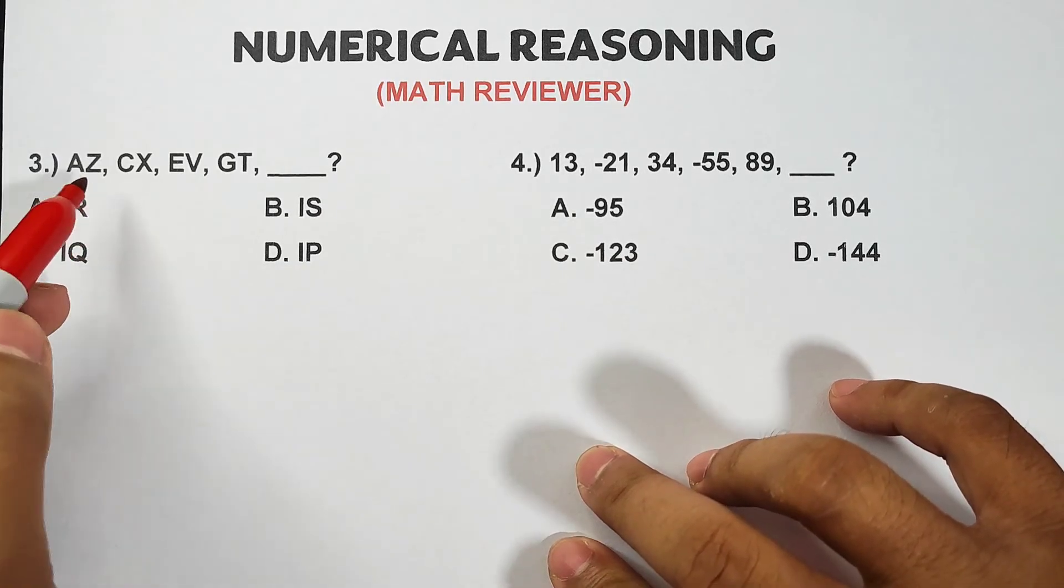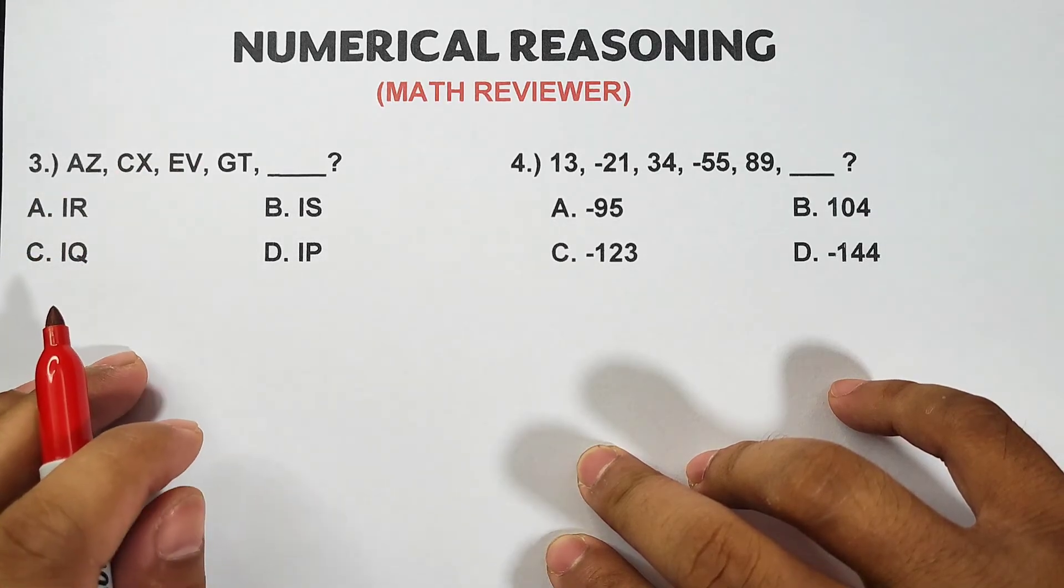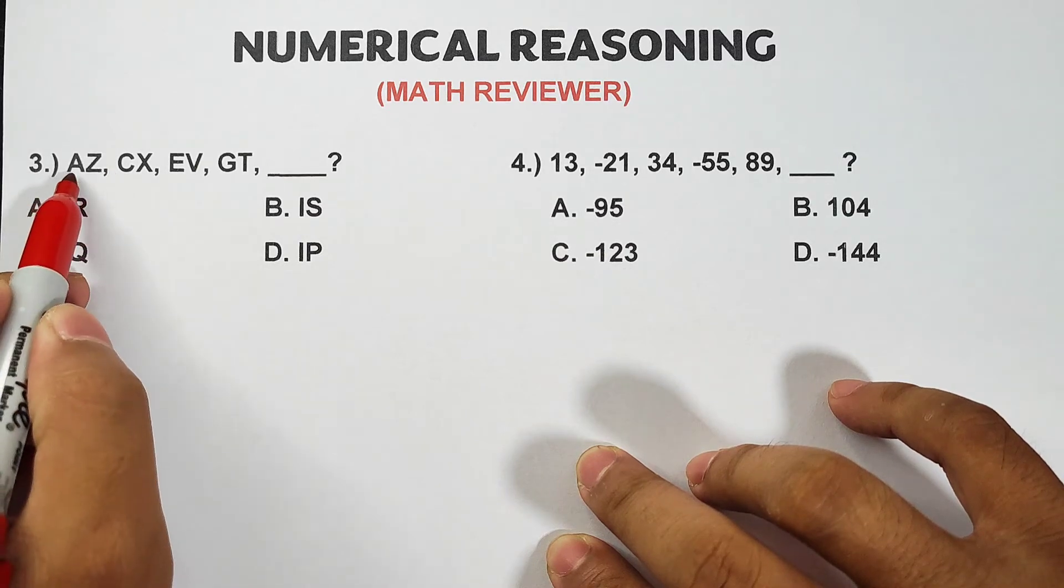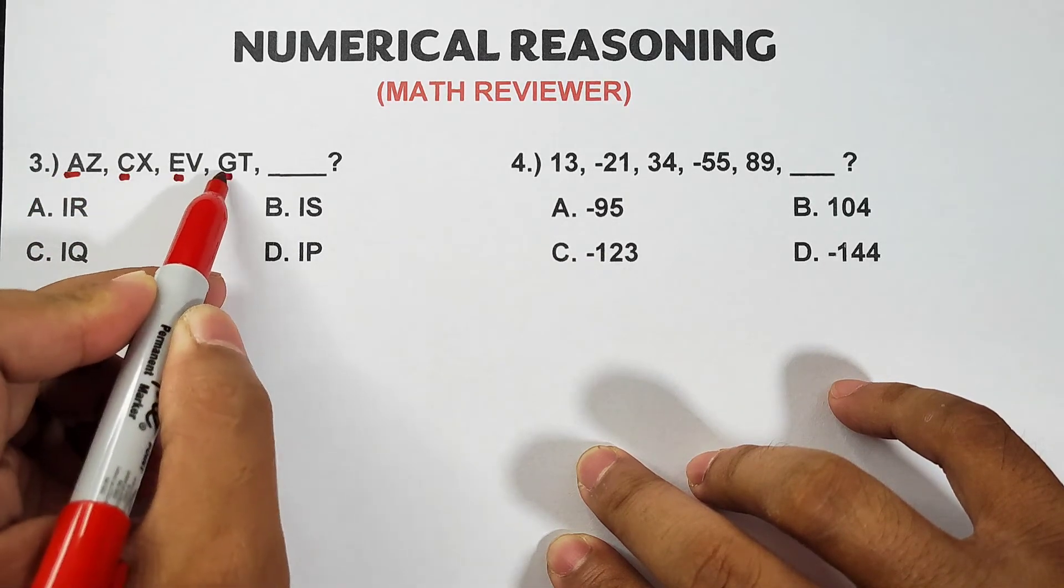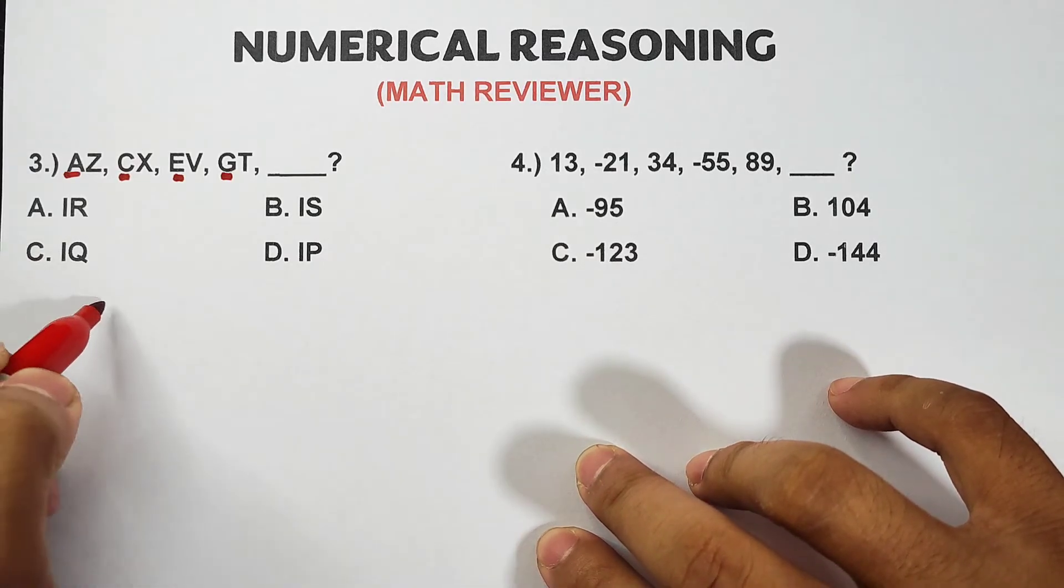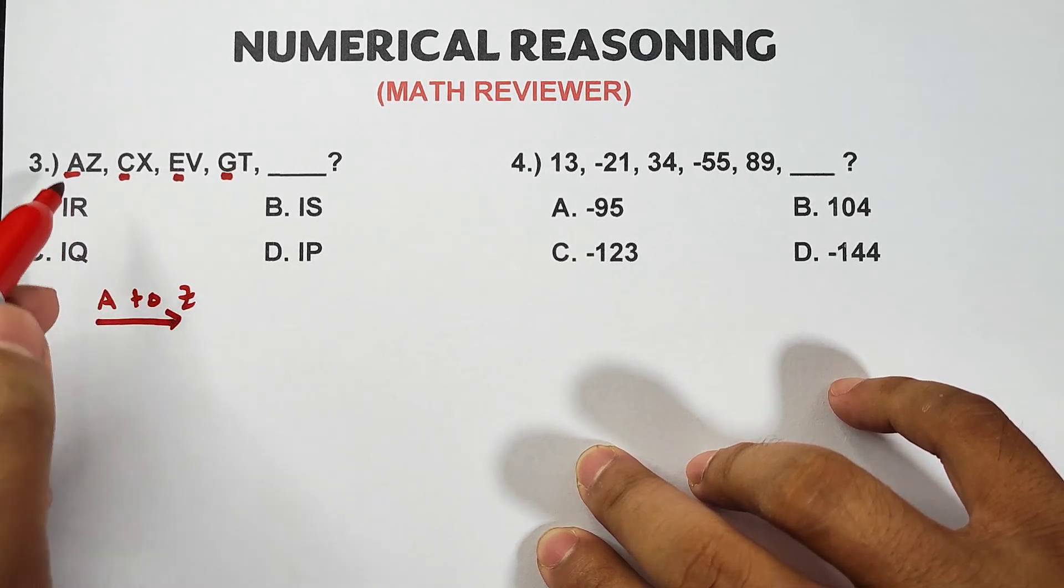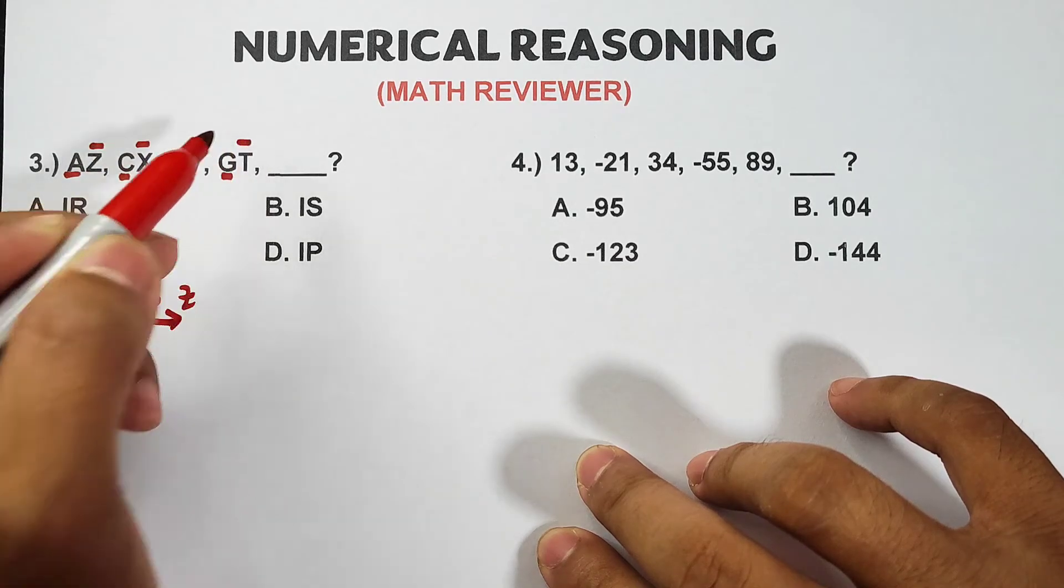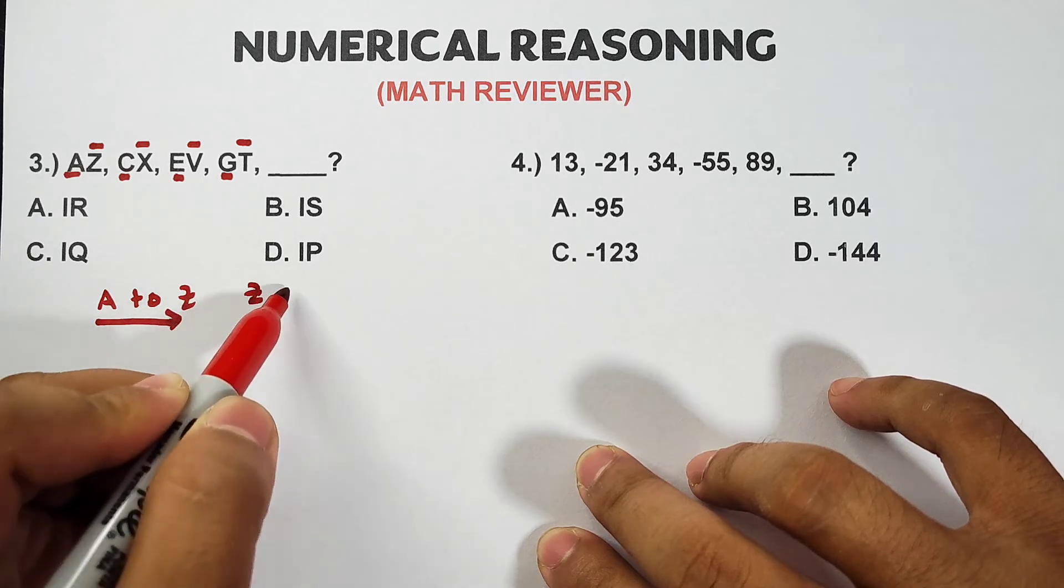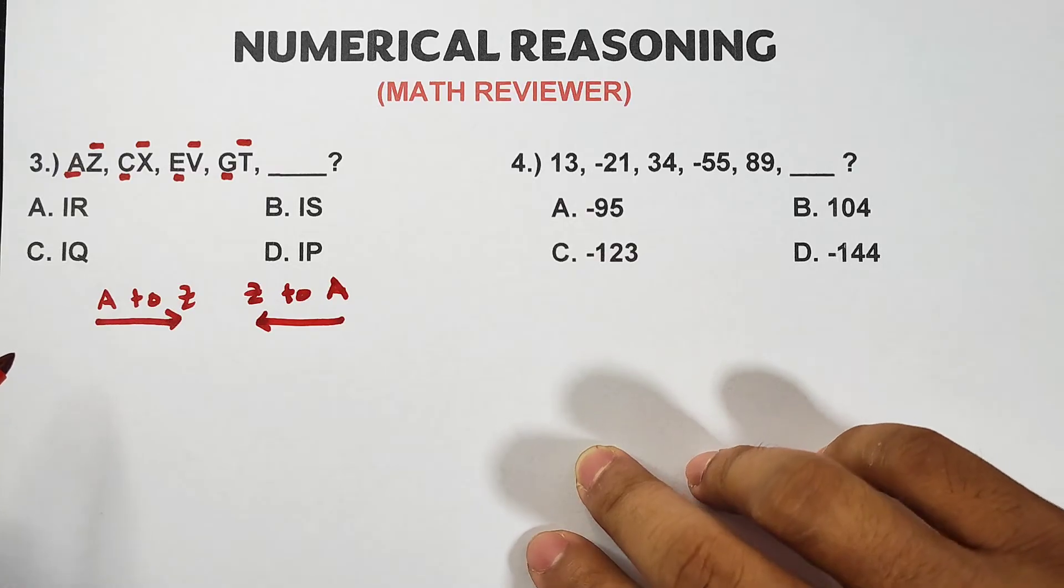So we have here letters AZ, CX, EV, GT. We need to find two letters. But I noticed here from the first and second, the first letters, their direction in the English alphabet is going up from A to Z, A to Z. Meanwhile the second letters are Z, X, V, T, correct? They go from Z to A, that's their direction.